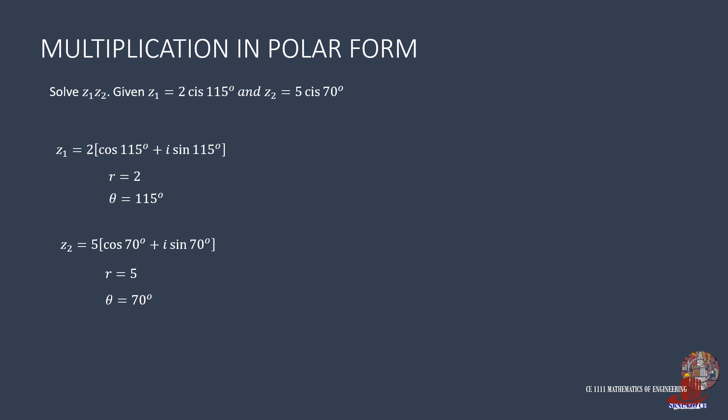Working on the product of r: 2 times 5 gives 10. The arguments are also added: 115 plus 70 gives 185 degrees. Thus, z1 times z2 in polar form is 10 times cosine of 185 degrees plus i sine of 185 degrees.